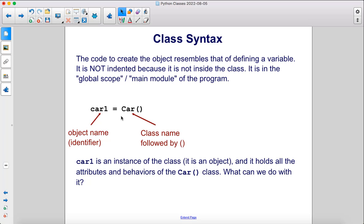an equal sign, then the class name followed by parentheses. Car1 is an instance of the car class. It is an object, and it holds all the attributes and behaviors of the car class. So what can we do with it?